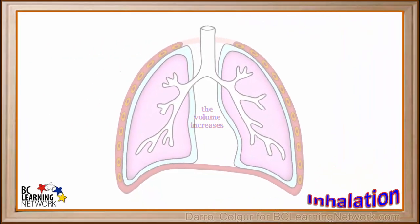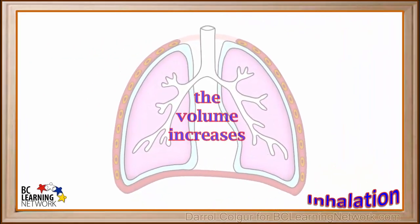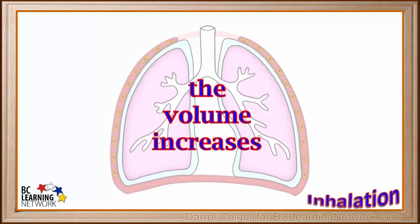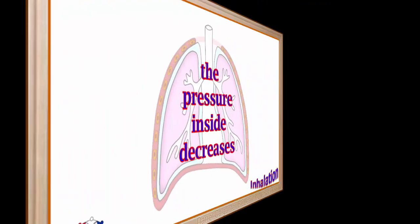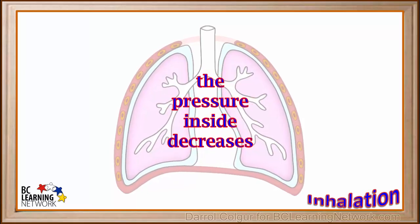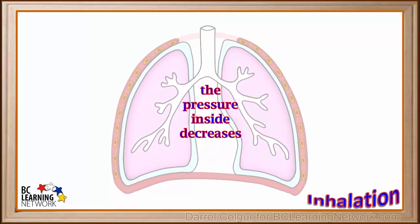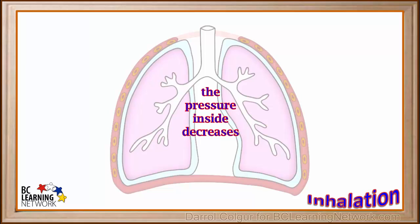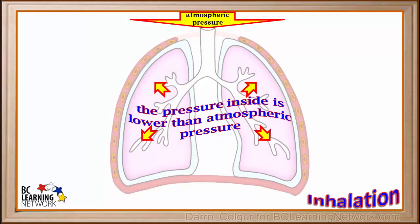If we watch this again, we see that as this occurs, the volume inside the chest cavity increases. Now when the volume inside a sealed container increases, the pressure inside will decrease. So as we pull the ribcage out and up and pull the diaphragm down, we are decreasing the pressure inside the chest cavity.